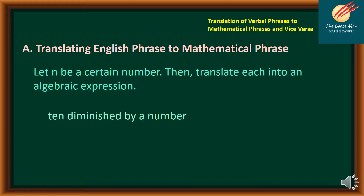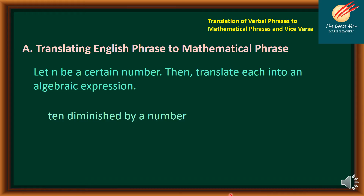Let's have another example: "10 diminished by a number." The word 10 can be translated into symbol as 10, diminished by translates to subtraction, and a number is represented by the variable N. Therefore, the example "10 diminished by a number" can be translated as 10 minus N.